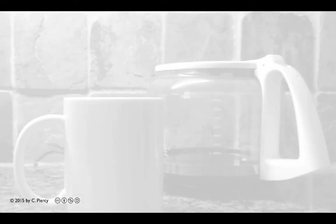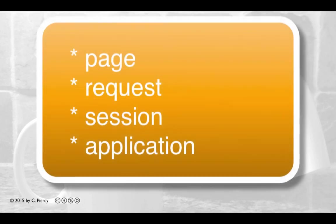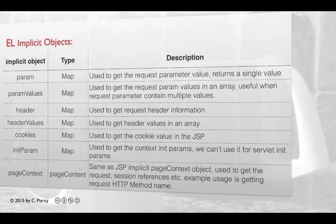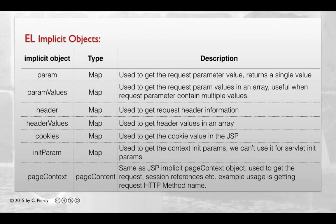Earlier, we discussed several implicit objects that you have access to using Java expression language. Namely, the page, request, session, and application objects. We use those to explicitly set the scope of the bean we want to access. It turns out that there are some other implicit objects that we can use.